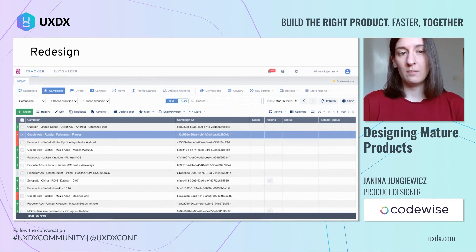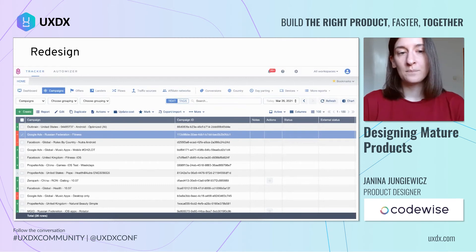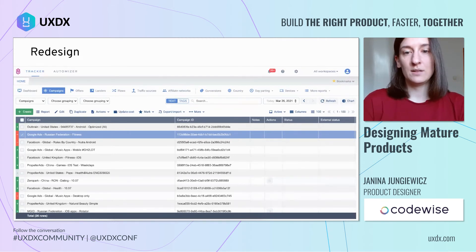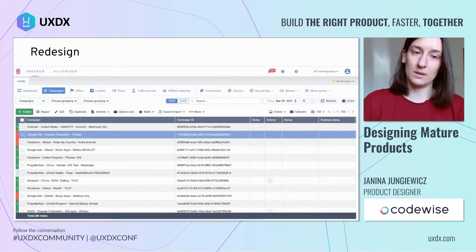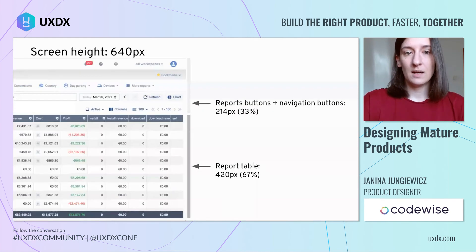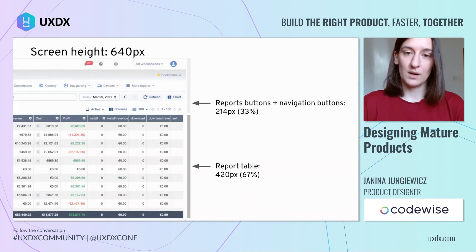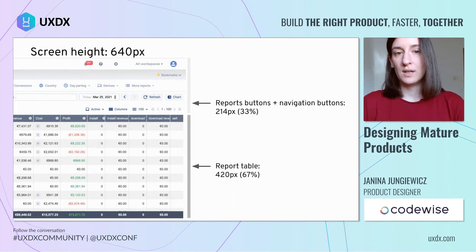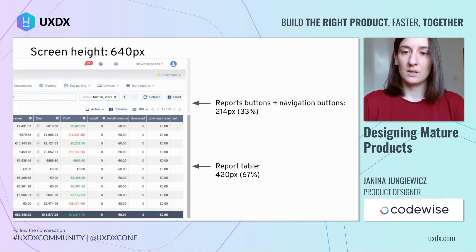Another change was dividing the buttons above the table into two groups. On the left, we now have buttons connected to managing campaigns, offers, and anything listed in the table. On the right, we have buttons connected to managing the report table itself. The effect of the improvements was, first of all, much more space for the report table — which for the 640-pixel screen now took 67% of it, so that was really good for our users.